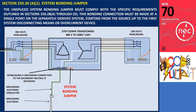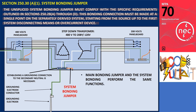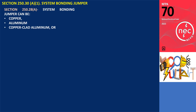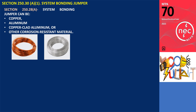The unspliced system bonding jumper must comply with the specific requirements outlined in sections 250.28 A through D. This bonding connection must be made at a single point on the separately derived system, starting from the source up to the first system disconnecting means or overcurrent device. Since the main bonding jumper and the system bonding jumper perform the same function, the system bonding must comply with the requirements specified in sections 250.28 A through D. According to section 250.28 A, the system bonding jumper must be made of copper, aluminum, copper-clad aluminum, or other corrosion-resistant material.